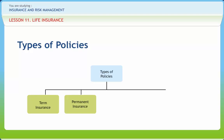Traditional variable life provides a minimum guaranteed death benefit, but many universal variable life products do not, and should investment experience be bad, coverage will terminate if substantially higher premium payments are not made. Credit life insurance need not be purchased from the organization granting the loan. Debit insurance is insurance with premiums payable monthly which are meant to be collected by the agent at your home. Joint life insurance provides coverage for two or more persons with a death benefit payable at the first death. Endowment insurance provides for the payment of the face amount to your beneficiary if death occurs within a specific period of time. Senior life insurance, sometimes referred to as graded death benefit plans, provides eligible older applicants with minimal whole life coverage without a medical examination.